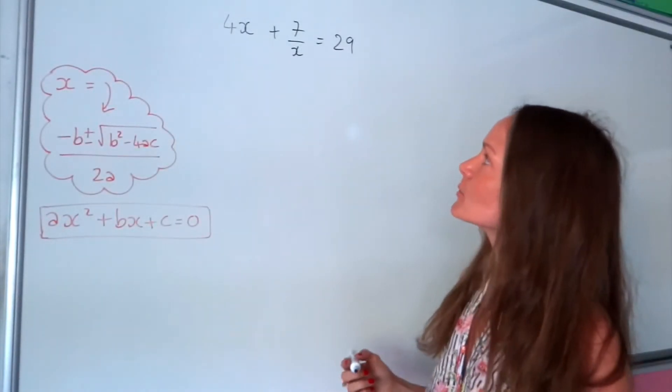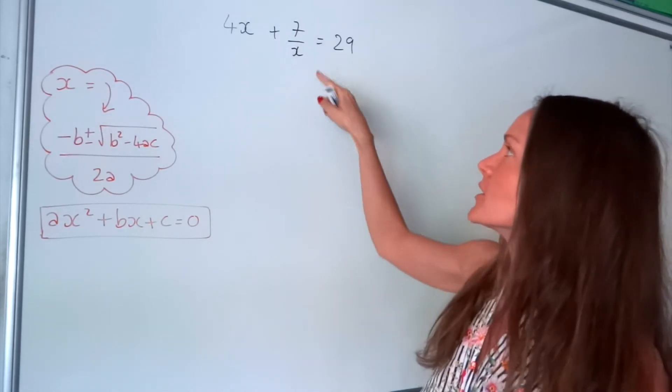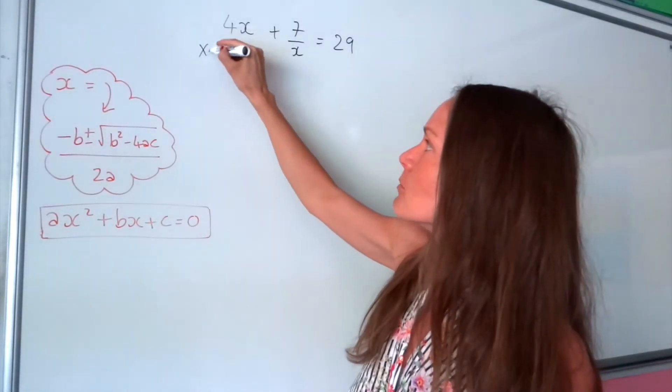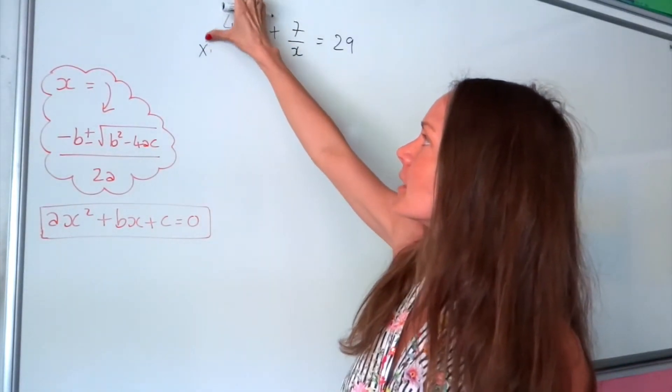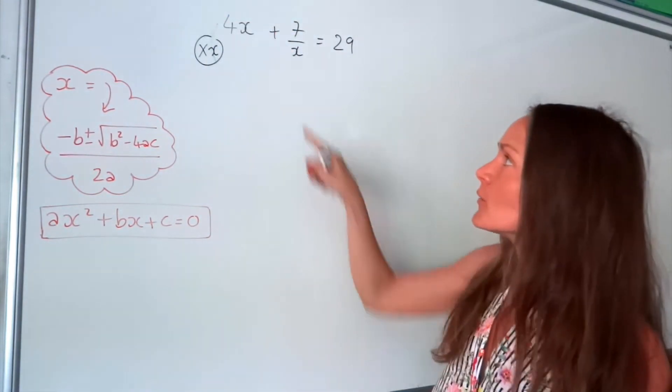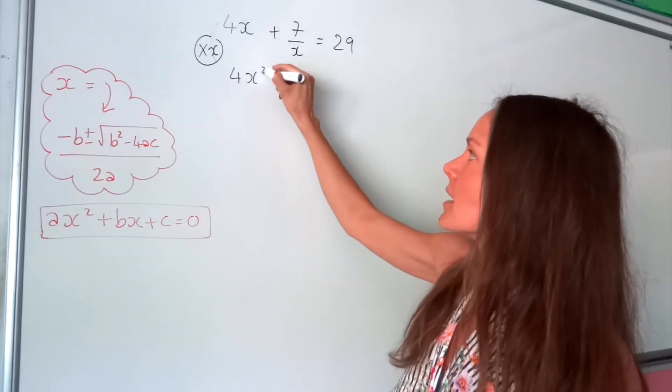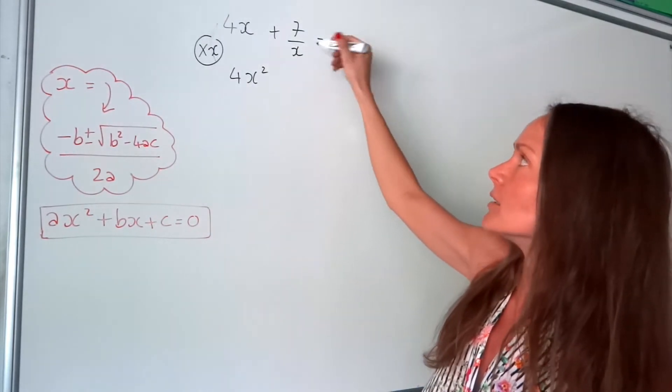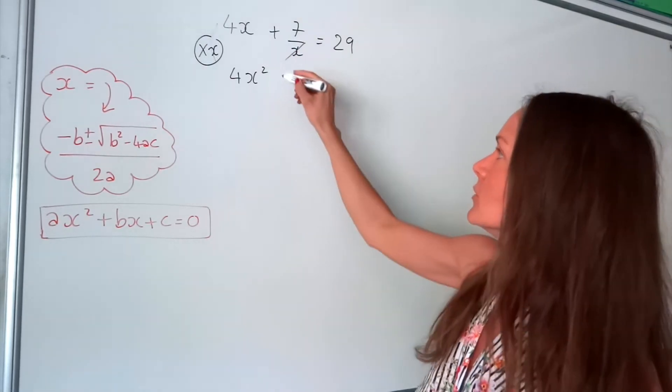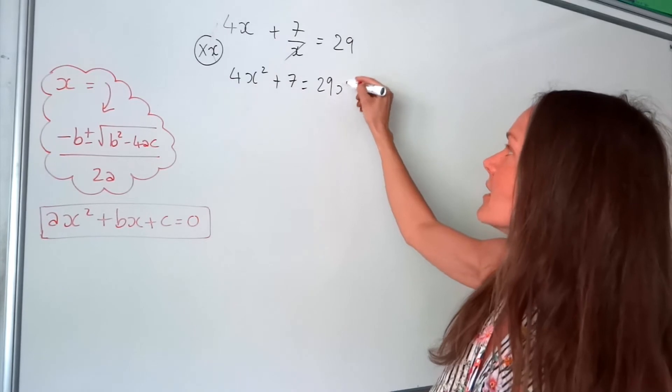Okay, so my first step in this one is to get rid of this fraction because I don't want x in the denominator of a fraction. So I'm going to multiply everything in this equation by x. So if I multiply this by x, I get 4x squared. If I times this by x, well, it just cancels and I'm left with 7. And if I times this by x, I get 29x.